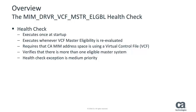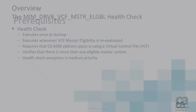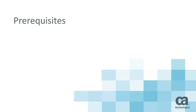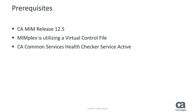The health check verifies that there is more than one master eligible system. If only one system is master eligible, then a medium priority health check exception is issued. To see this health check, you need to be running CA MIM release 12.5 or above with a virtual control file. Also, the CA Common Services Health Checker service must be installed.